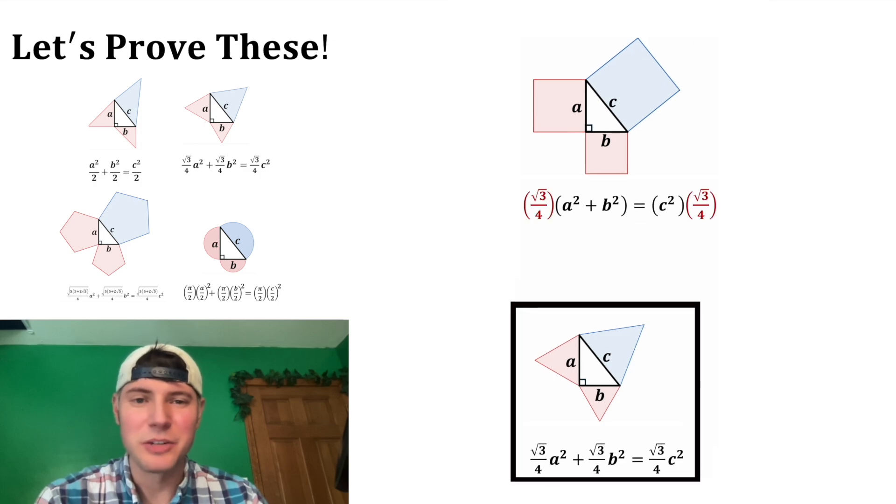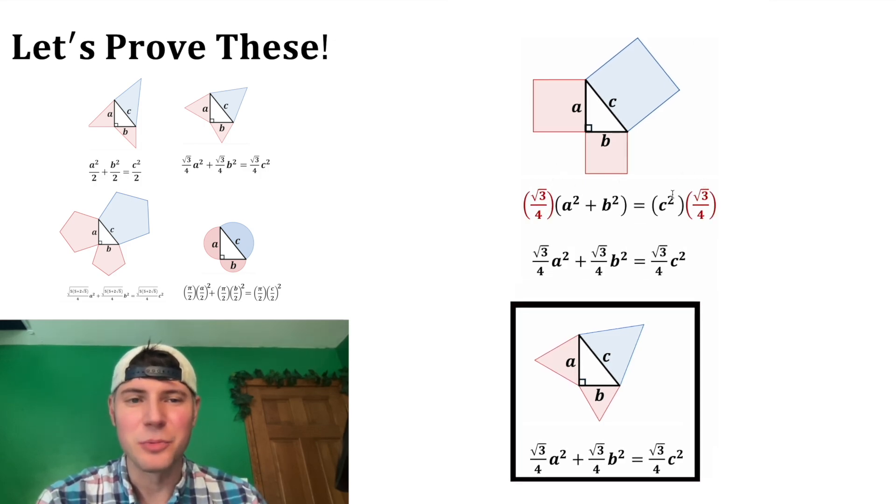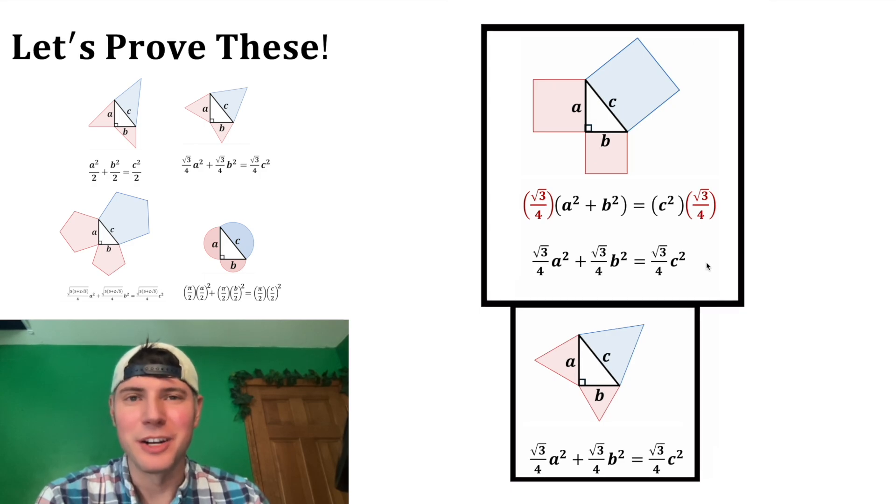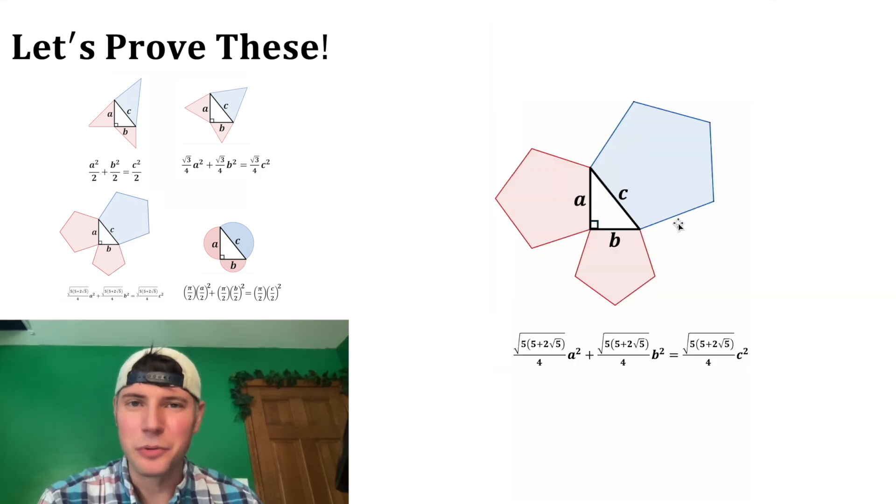We multiply both sides of the equation by root 3 over 4. This will distribute to both of these, and this distributes here, and we now have the equation we wanted. It's the same thing for regular pentagons. You just multiply both sides by a constant.